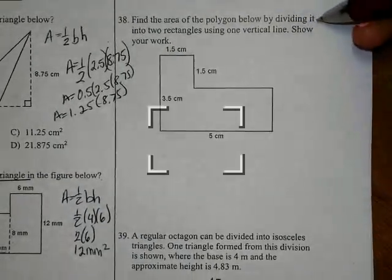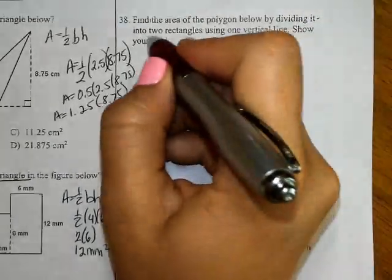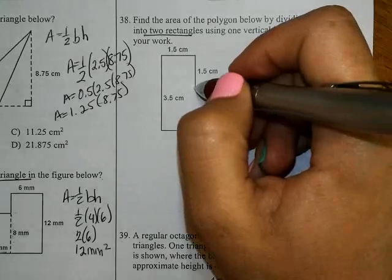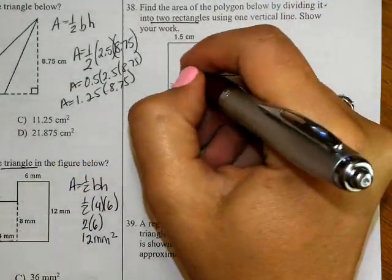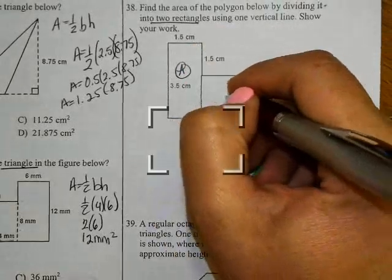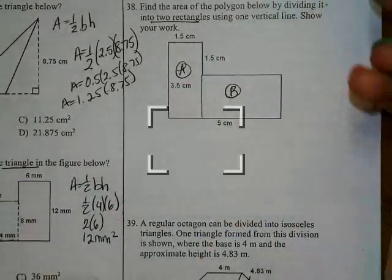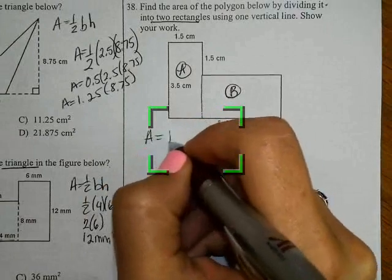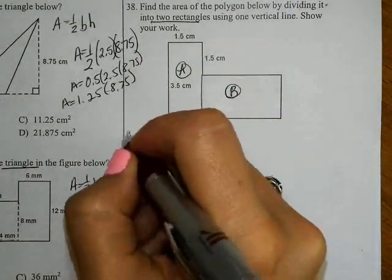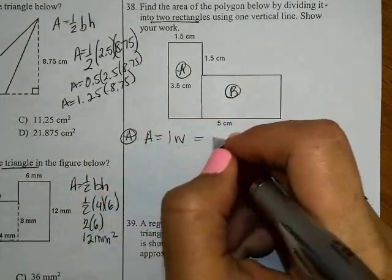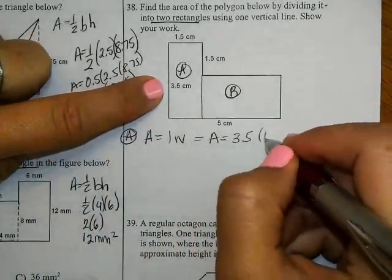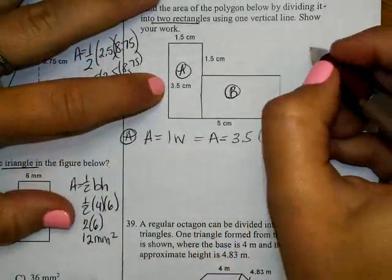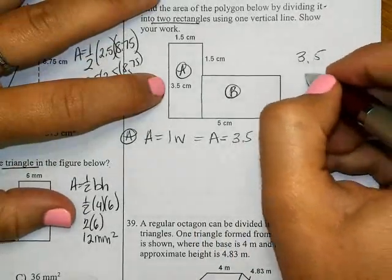Find the area of the polygon below by dividing it into two rectangles using one vertical line. Show your work. So you have rectangle A and rectangle B. My rectangle A formula is length times width. Come to the side, especially since it says show your work.